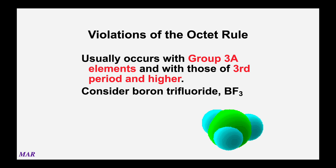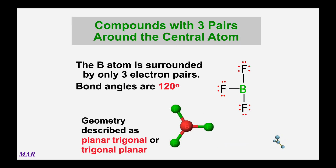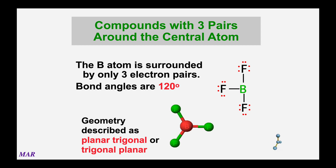Let's look at boron trifluoride. Boron trifluoride is boron with three fluorines around it. If you have three atoms around a central atom, those three are going to be as far apart from each other as they can, and that's the trigonal planar geometry. Sometimes trigonal planar is called planar triangle. Around the central atom with three outside atoms, the angles will be 120 degrees.